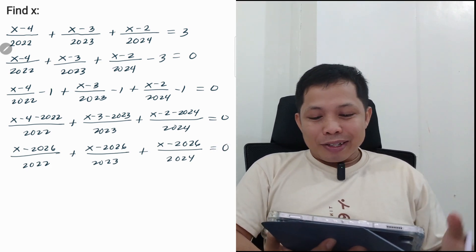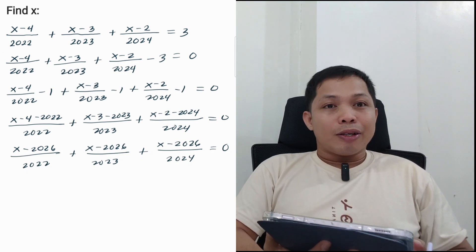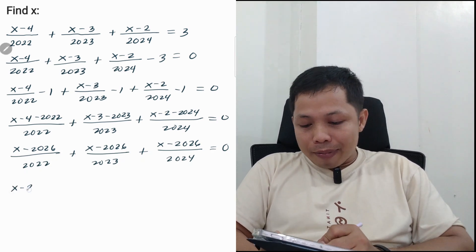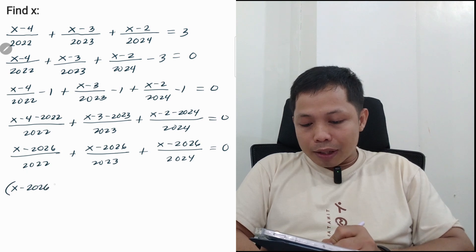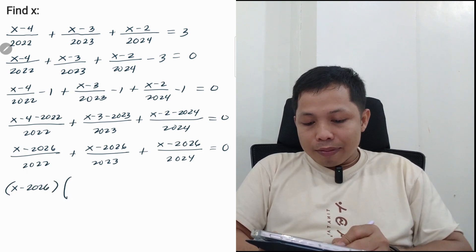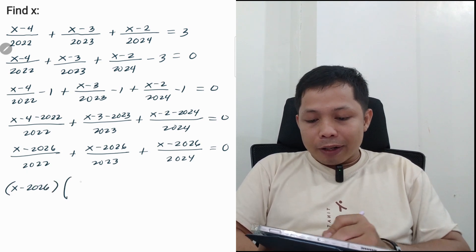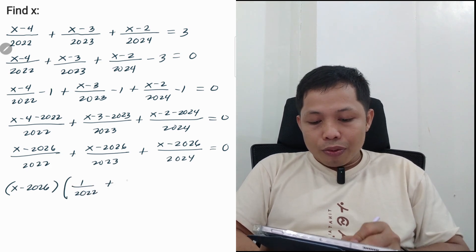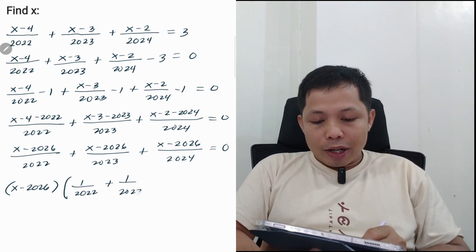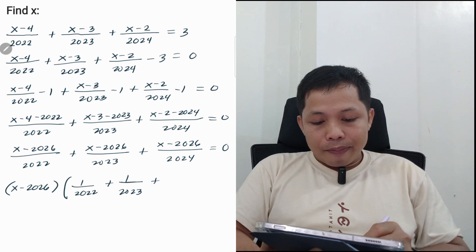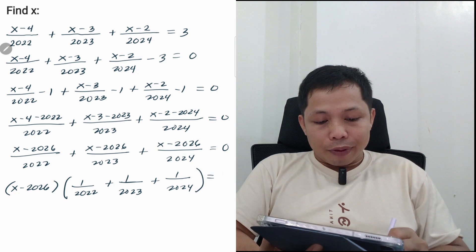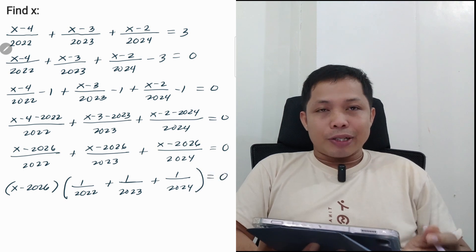Now, each term has x - 2026, so we can factor this out. So we have (x - 2026) times (1/2022 + 1/2023 + 1/2024) = 0.